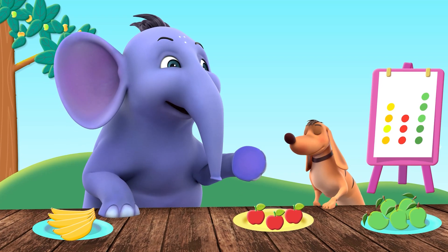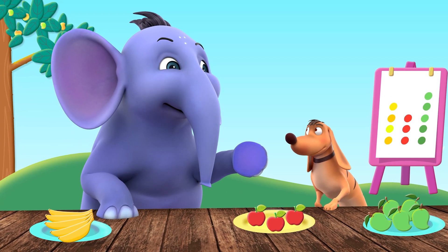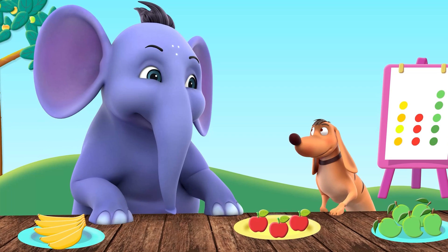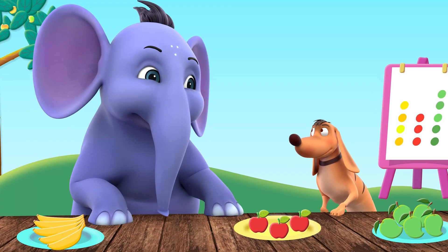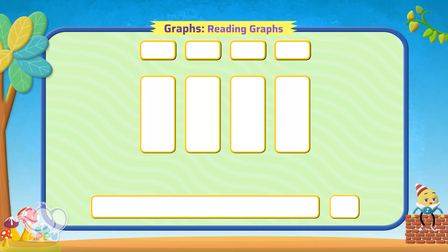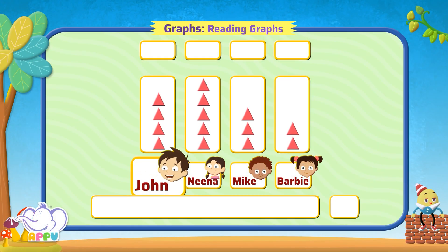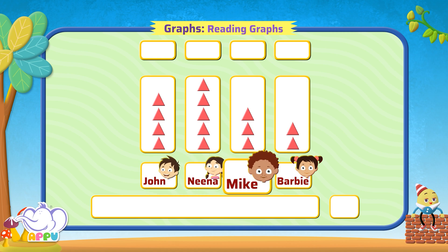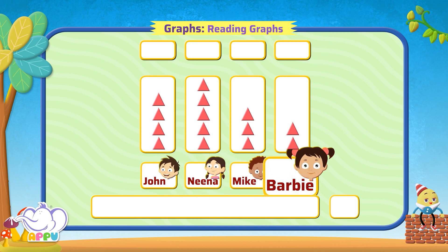Tiger, I'm going to teach you how to read graphs. Okay, I'm ready. We have four friends: John, Nina, Mike, and Barbie. The picture graph is about the number of lollipops each of them have.